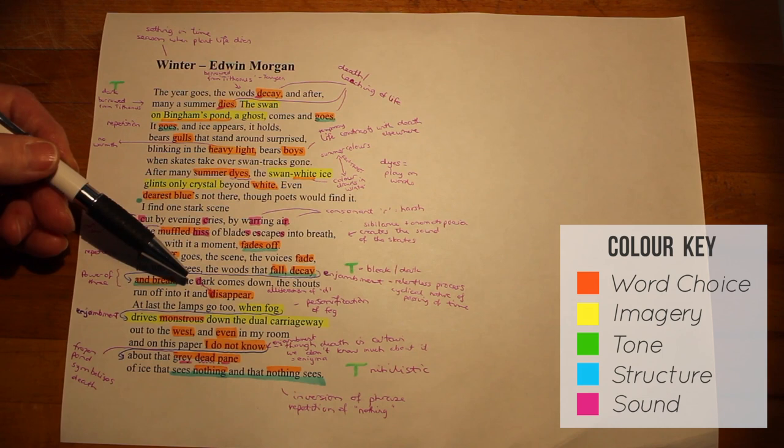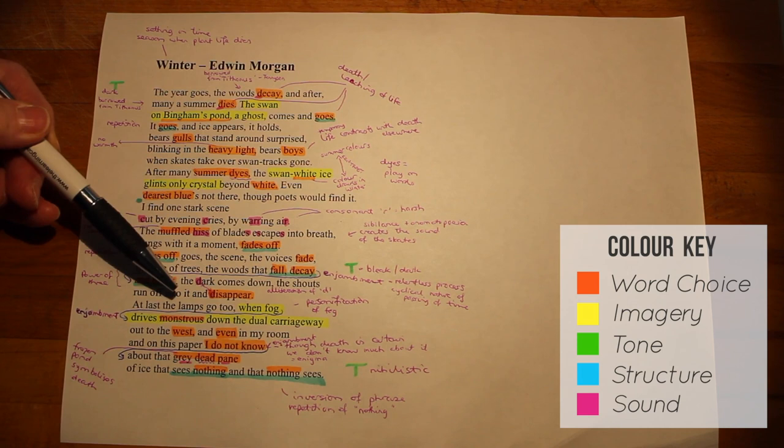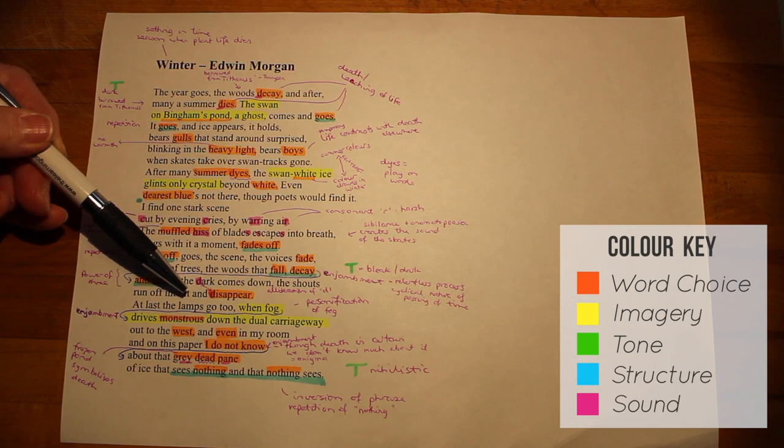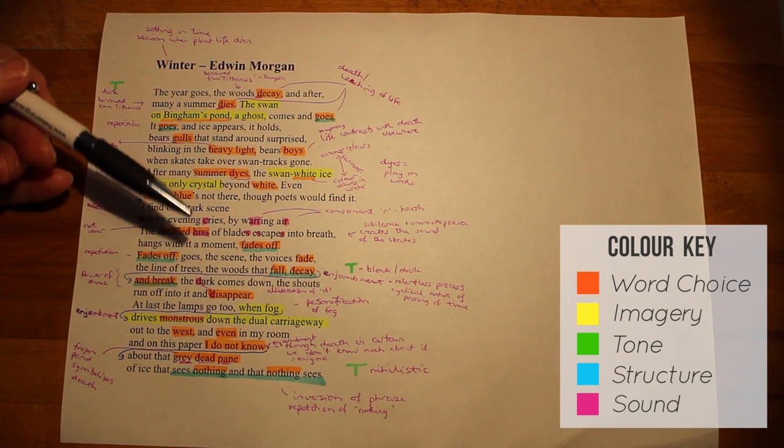Then we're told that the dark comes down, that the boys disappear, the shouts run off into the darkness. And we get the feeling that everything is going. We've already been told that the colours are fading, that things are decaying. Now it's getting dark, the light has gone, the sound has gone and the life, which was represented by the boys, has also gone.